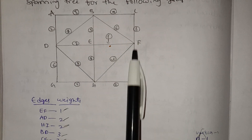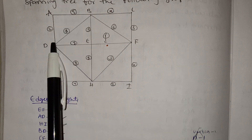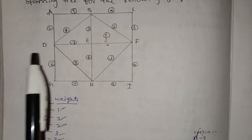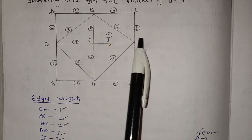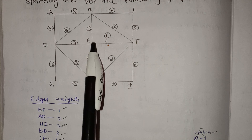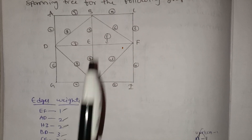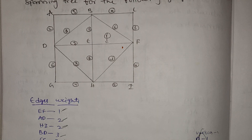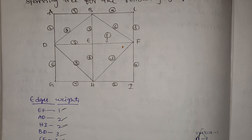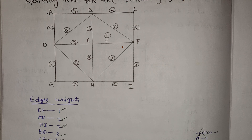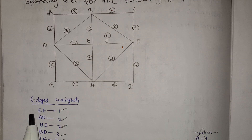We have edges: 1, 2, 3, 4, 5, 6, 7, 8, 9, 10, 11, 12, 13, 14, 15, 16. We have a total of 16 edges. The spanning tree edges are sorted in ascending order by weight.